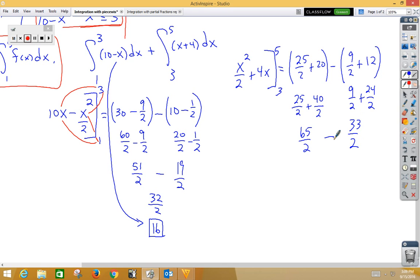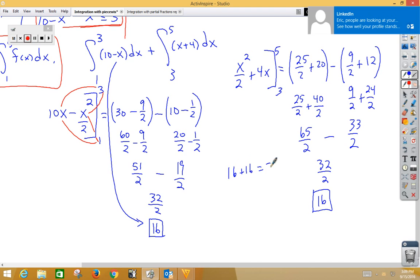Subtract, that gives us 32 halves or 16. Now we need to add those two answers, so 16 plus 16 makes 32 as our final answer.